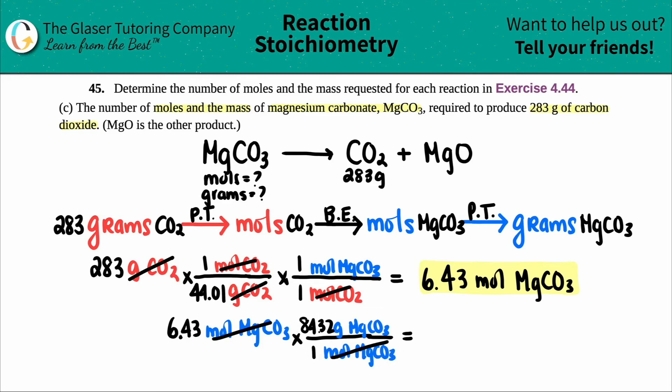The only unit that's left is grams of magnesium carbonate, so we are good. Now I multiply. So this time, 6.43, three sig figs, so 542 grams of magnesium carbonate.